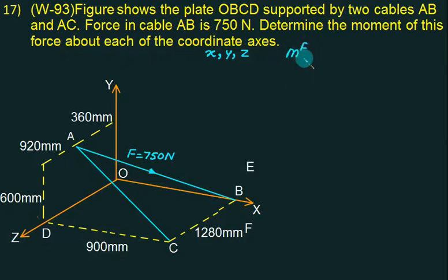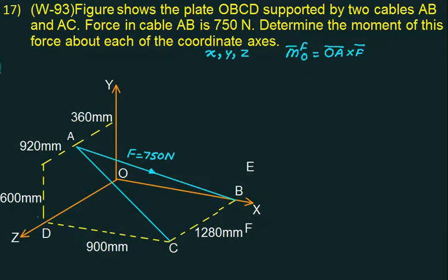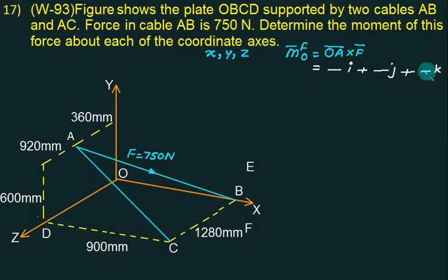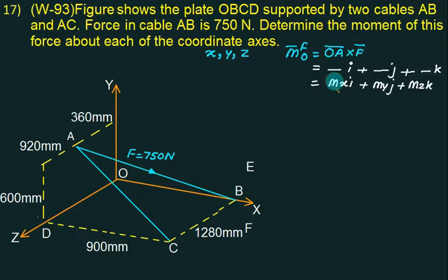If we find the moment of the force about the origin O, we write it as M_O = OA cross F. The answer will come in the form of some I plus some J plus some K, because it is a vector quantity with three components. This gives us M_X·I, M_Y·J, and M_Z·K — which are the moments about the X axis, Y axis, and Z axis respectively.